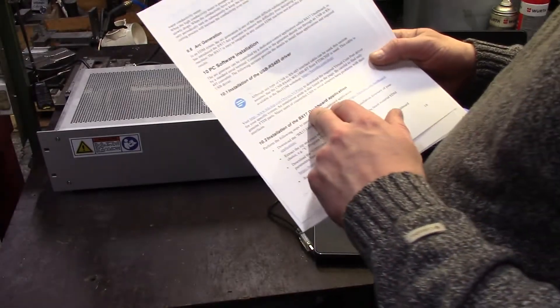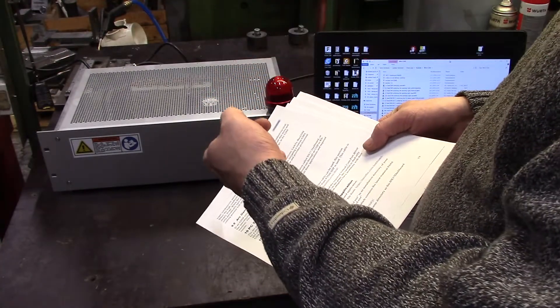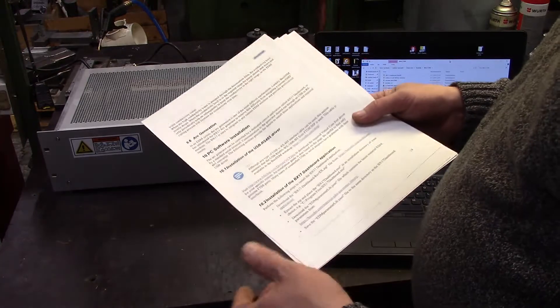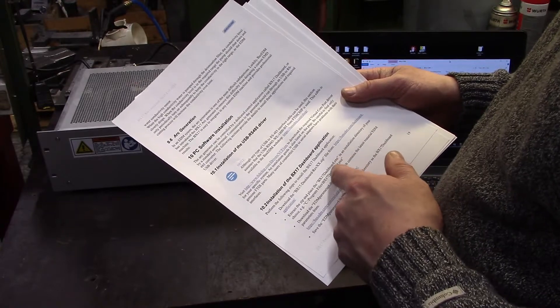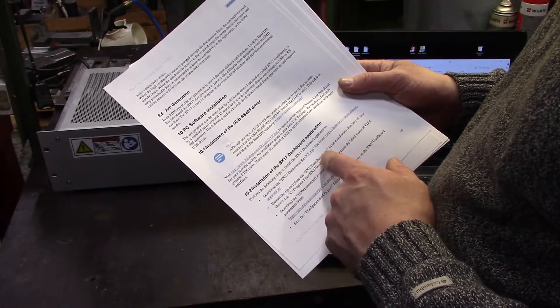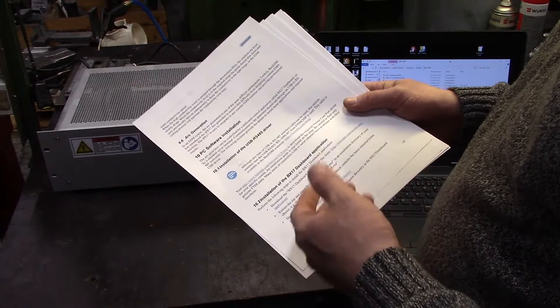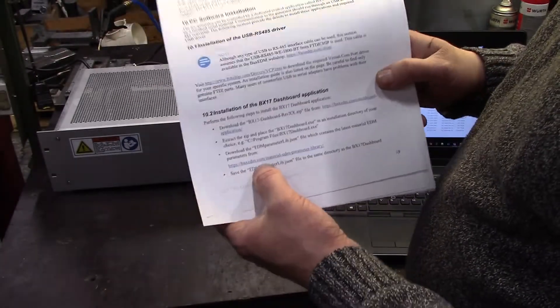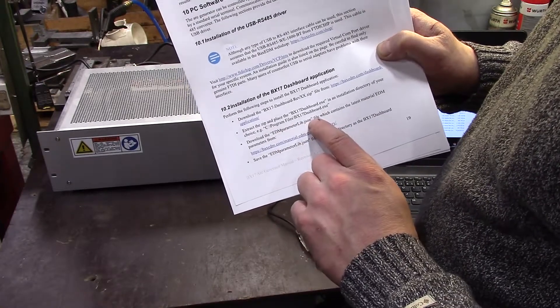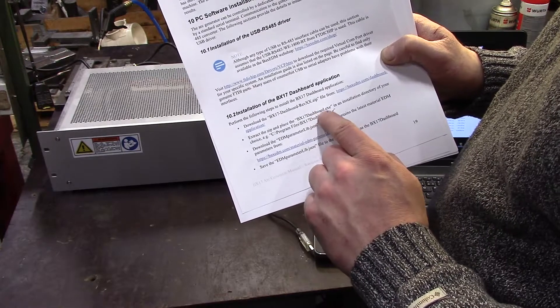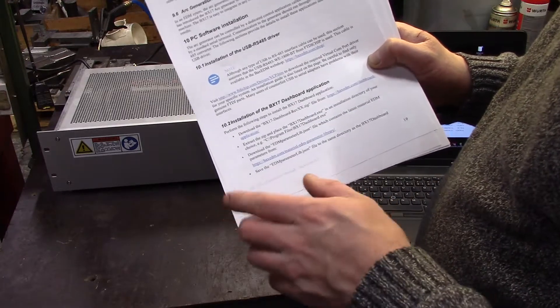Then it was the BX17 dashboard application that you require to control that thing unless you write your own. It was very easy, just download the zip. There was nothing else in it except the BX17 dashboard.exe. I just downloaded it to some file and the most important part, download the material library file, the JSON file, and put it into the same folder as the dashboard.exe application. Otherwise it won't run. Then it will give you an error.